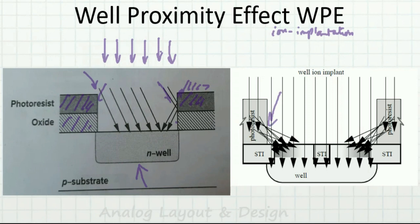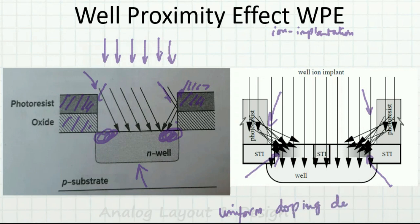The ions get diverted at the edges of the N-well — in these corner regions there won't be a uniform doping density. There is a gradient: the doping density at the edges and the doping density in the middle won't be the same. This gives rise to an effect known as the well proximity effect.